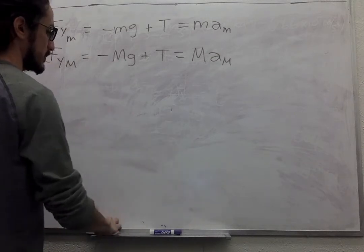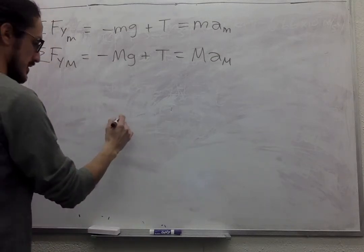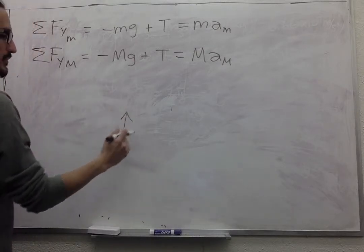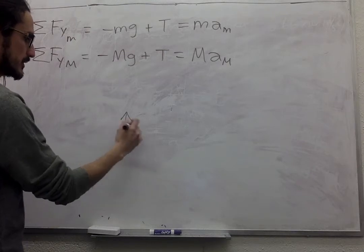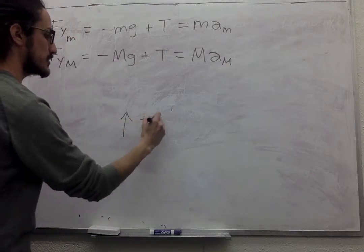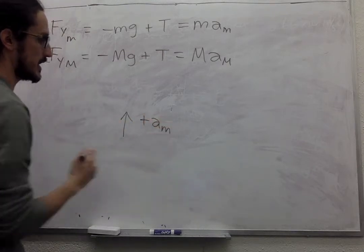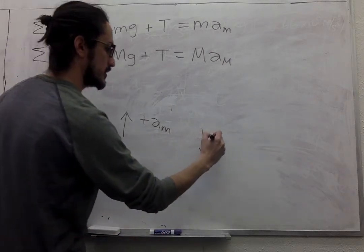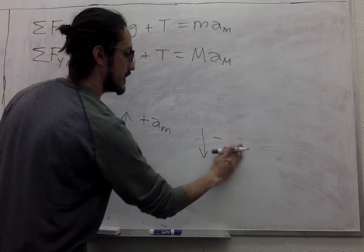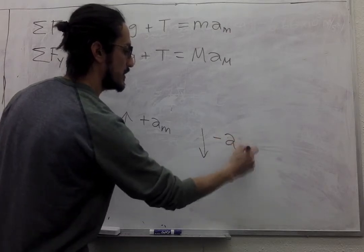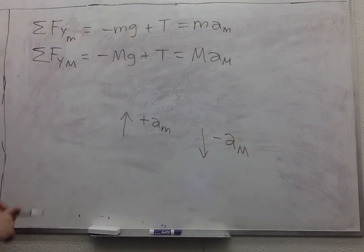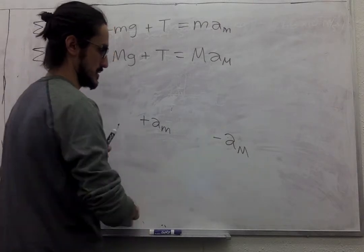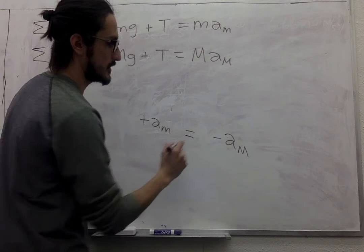So mathematically we can say that the first one moves up, that's the positive acceleration. So plus a_M, this one is going to move down, minus a_M. That's the acceleration constraint.